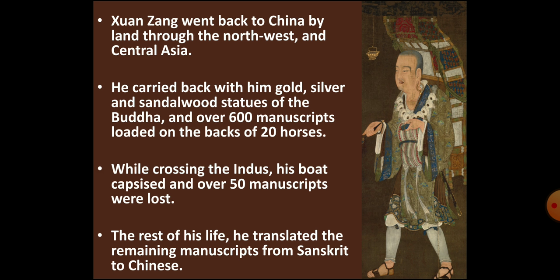Another Chinese pilgrim, Xuanzang (Wen Zhang), took the land route to return to China, through the Northwest and Central Asia. He carried back statues of the Buddha made of gold, silver and sandalwood, and more than 600 manuscripts, loaded on the backs of 20 horses. But on the way, he had to cross River Indus. When crossing the river, his boat capsized and he lost more than 50 manuscripts. When he reached China, he spent his life translating the remaining manuscripts from Sanskrit to Chinese.